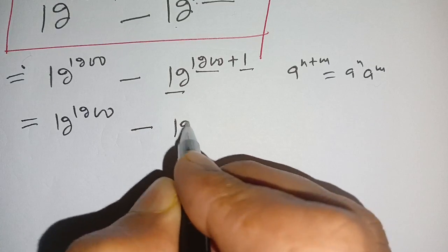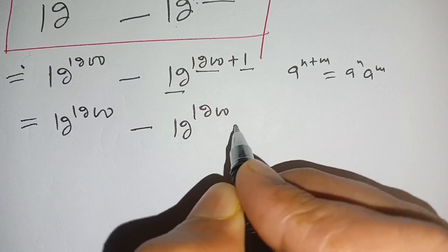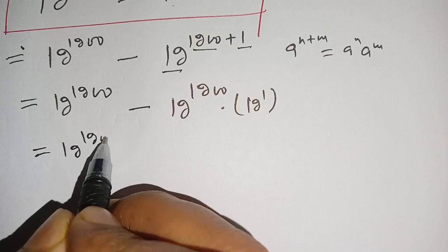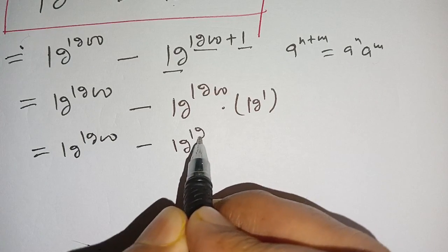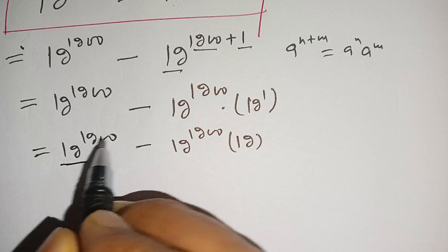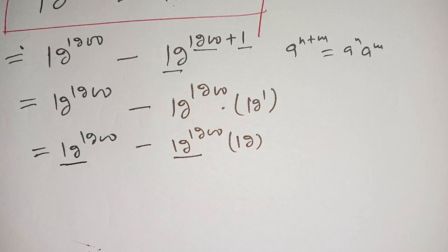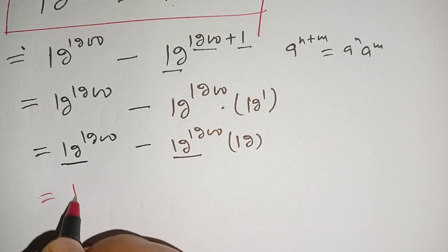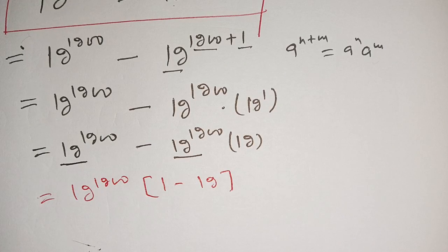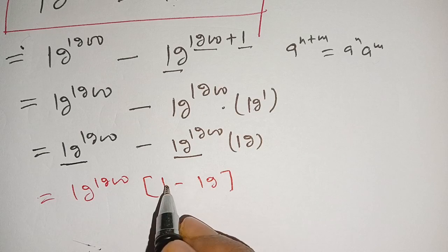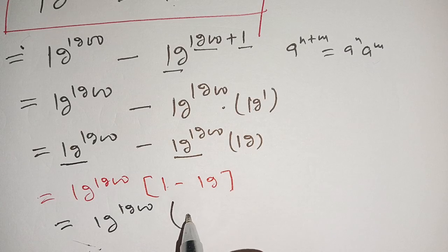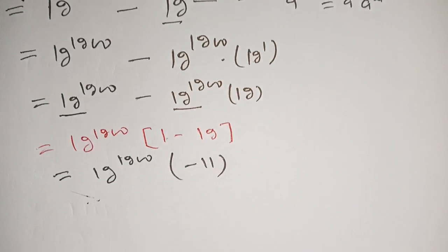Applying this identity, we get 12 power 1200 minus 12 power 1200 times 12 power 1. We can take out 12 power 1200 as a common factor, giving us 12 power 1200 times the quantity 1 minus 12.